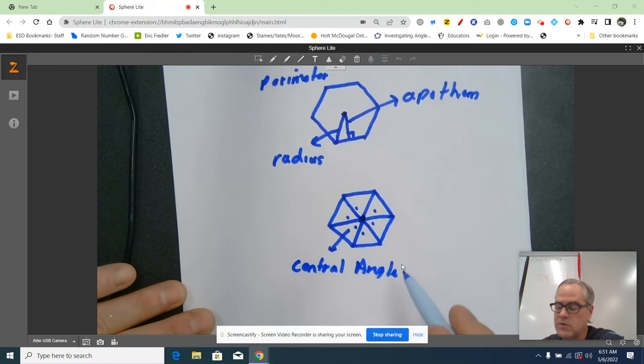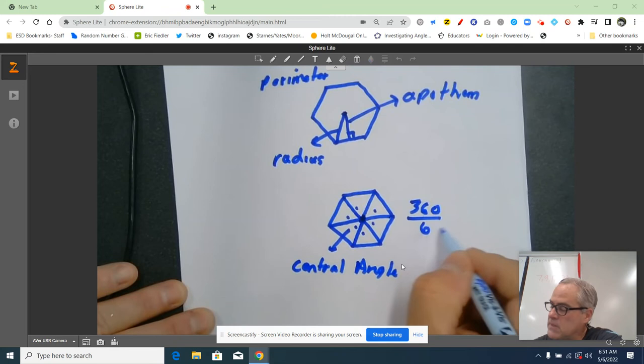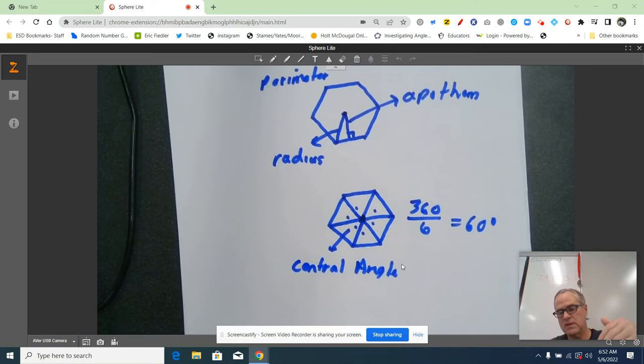And if I want to find the measure of those central angles, here's all I do: I take 360 degrees and divide it by six. If there were five, I would have five central angles and I'd take 360 divided by five. That's a key component of being able to solve these questions as well.